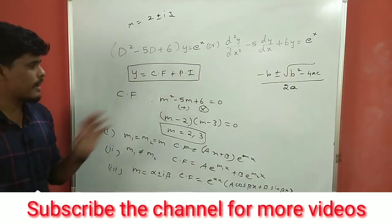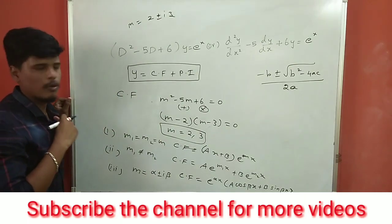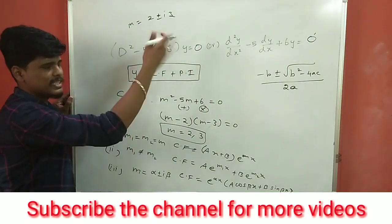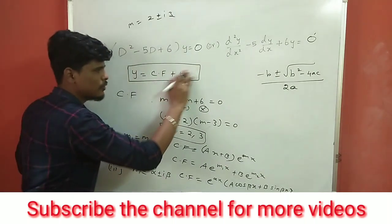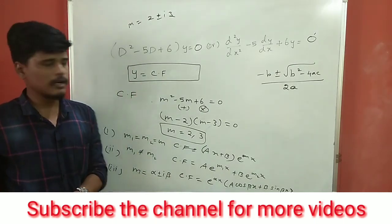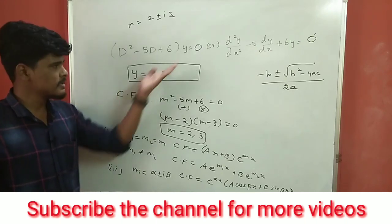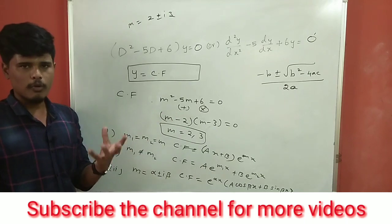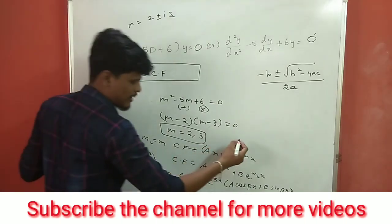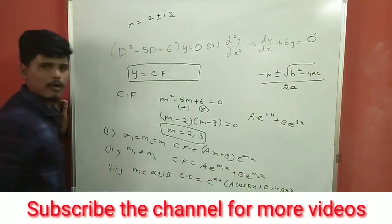So we have three cases: two equal roots, two different roots, and complex roots. For example, if m = 2 and m = 3 (two different roots), the complementary function is: CF = A·e^(2x) + B·e^(3x). That's the straightforward case using Case 2.